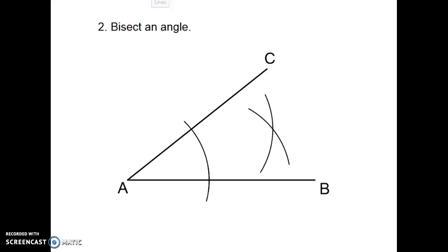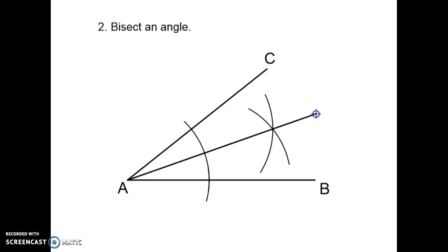Now take your pencil and your ruler. Put your pencil point on the point of the angle and draw a straight line through where those arcs cross. That angle has now been divided equally into two without measuring it with a protractor. Again, when this question is marked, those arcs and that line are all the markings the examiner is looking for — it shows you've done it using the compass method.